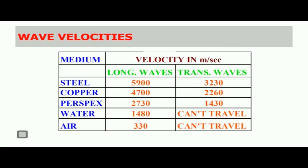The velocity of ultrasonic waves is a property of the material or medium in which they are travelling. The velocity depends on whether it is a longitudinal or transverse wave. In case of steel, the velocity of longitudinal waves is approximately 5900 m/s, whereas transverse waves travel at 3230 m/s. For perspex, longitudinal waves travel at 2730 m/s and transverse waves at 1430 m/s. In water, longitudinal waves travel at 1480 m/s, while transverse waves cannot travel through water. In air, the velocity of longitudinal waves is 330 m/s.